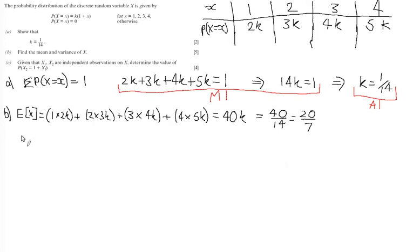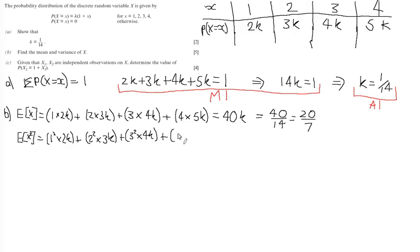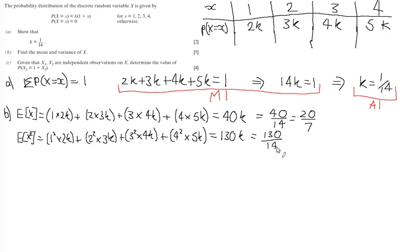For the variance, we first need E(X²). This is almost identical to E(X) except we square the x values: E(X²) = 1²×2k + 2²×3k + 3²×4k + 4²×5k. Working through: 2k + 12k + 36k + 80k = 130k, which equals 130/14, simplifying to 65/7. I would leave that as an exact fraction.